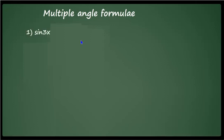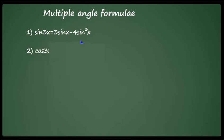The first one is sin 3x: sin 3x is equal to 3 sin x minus 4 sin cube x, and cos 3x is equal to 4 cos cube x minus 3 cos x. You may confuse the formulae of sin 3x and cos 3x and sometimes write for sin 3x: 4 sin cube minus 3 sin x.